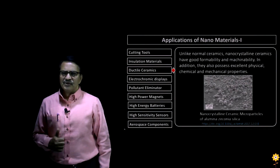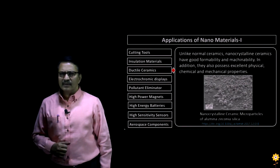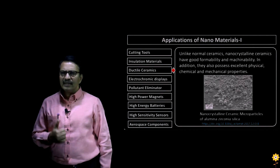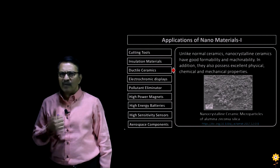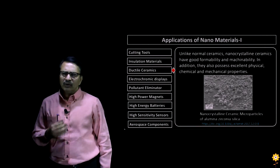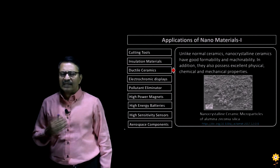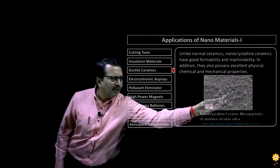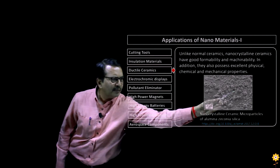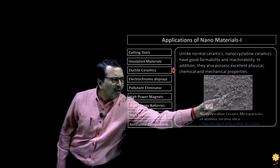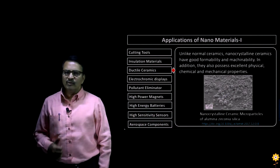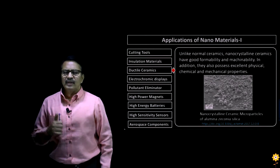Here is another application of nanocrystalline materials. Unlike normal ceramics, nanocrystalline ceramics have very good formability and machinability. Not only that, but they have excellent physical, chemical, and mechanical properties. Here is an example of nanocrystalline ceramic microparticles of alumina, zirconia, and silica.